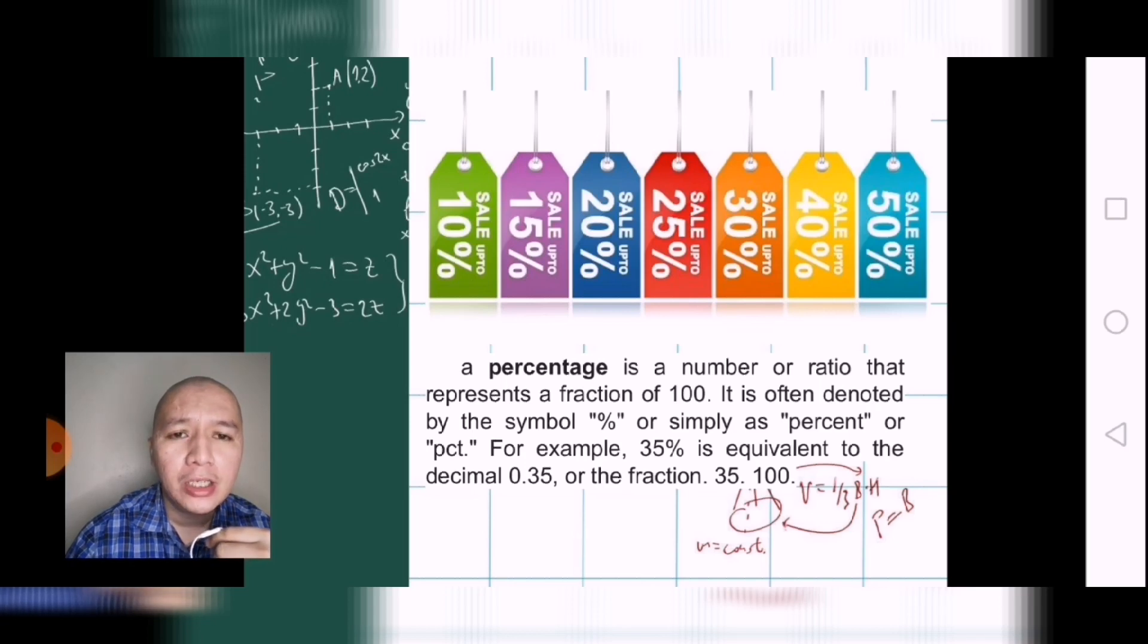A percentage is also a whole which is equivalent to 100%. And then what's been discussed here is that 35% is a portion of a hundred percent. 35% as well can be expressed in different forms like decimal and fraction.